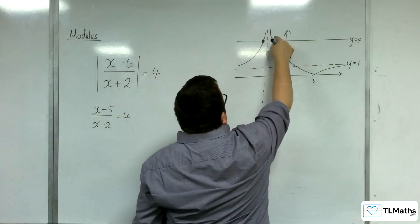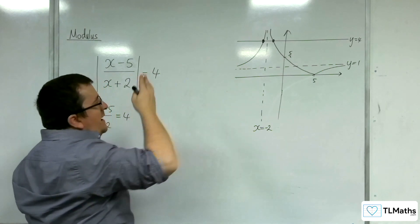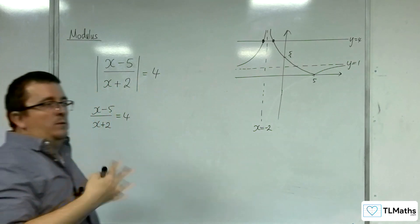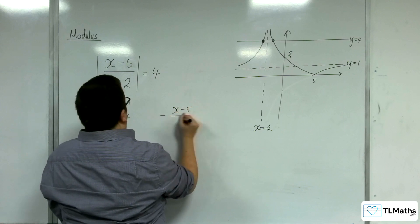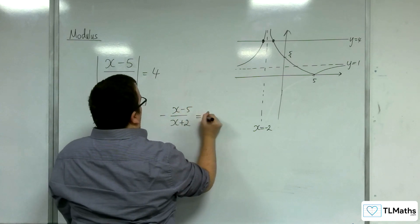And this point is where y equals 4 is intersecting the negative part of the graph, the bit that was reflected up. So, minus x take away 5 over x plus 2 equals 4.